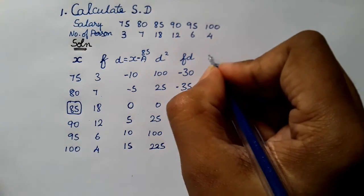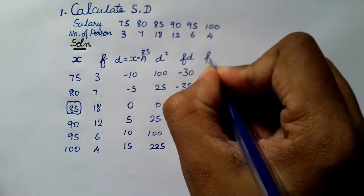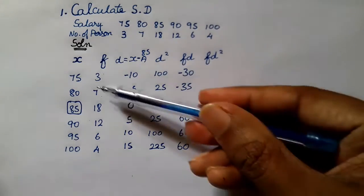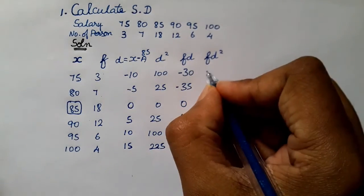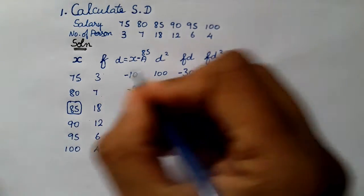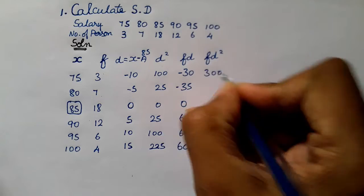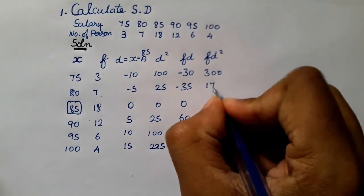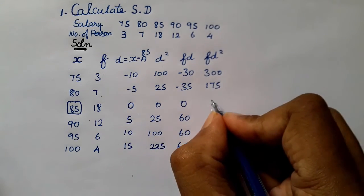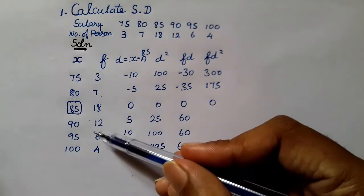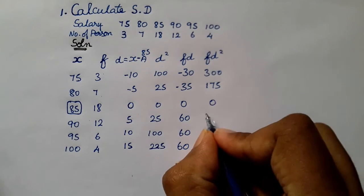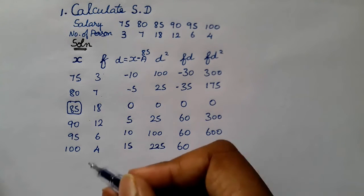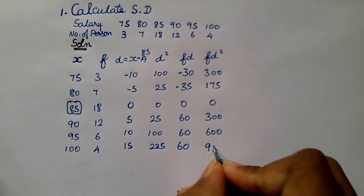Now let's calculate FD squared. F is the frequency column and D squared is this column. 3 into 100 is 300. 7 into 25 is 175. 18 into 0 is 0. 12 into 25 is 300. 6 into 100 is 600. 4 into 225 is 900.